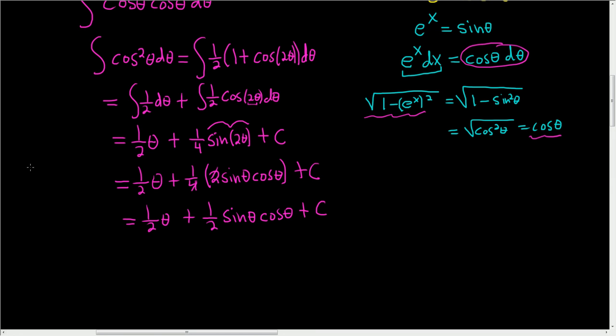So now we're going to use our original substitution. We said that e to the x was sine theta. Let me write that backwards. So sine theta is equal to e to the x, and we want to think of this as e to the x over 1. And then using SOH-CAH-TOA, we know that sine is opposite over hypotenuse. So we can draw a nice little triangle. So here's our little triangle. So this is theta. And the opposite is going to be e to the x, and the hypotenuse is 1.